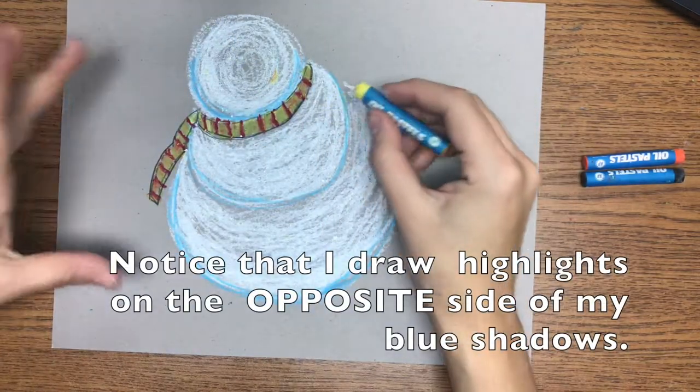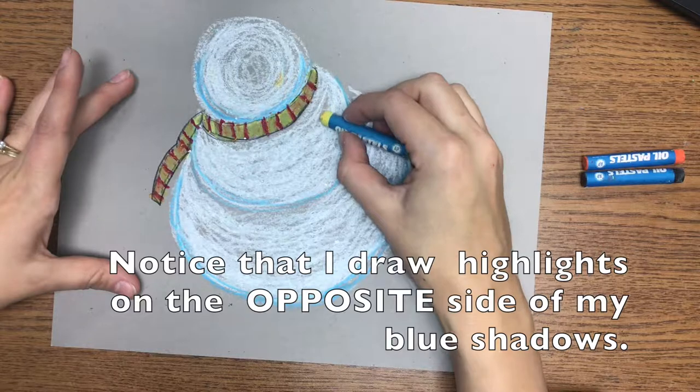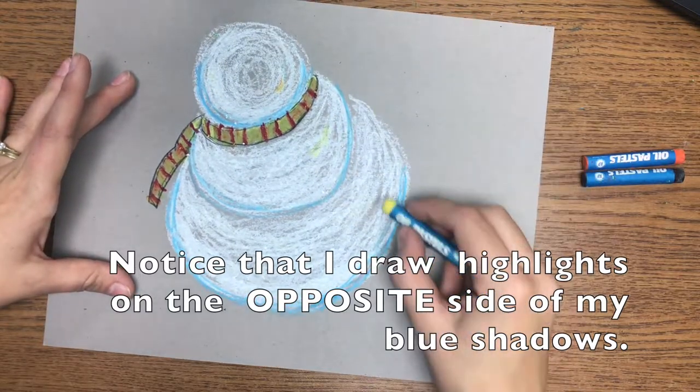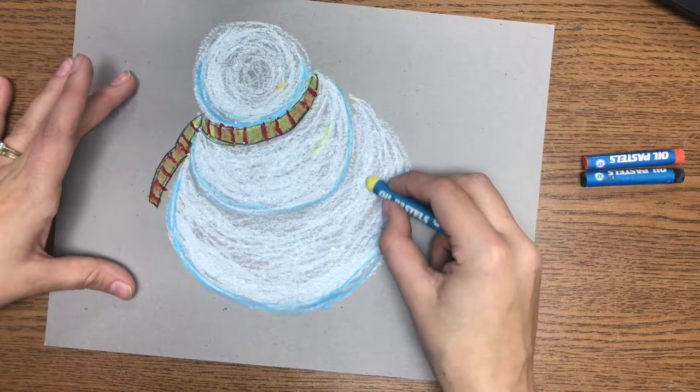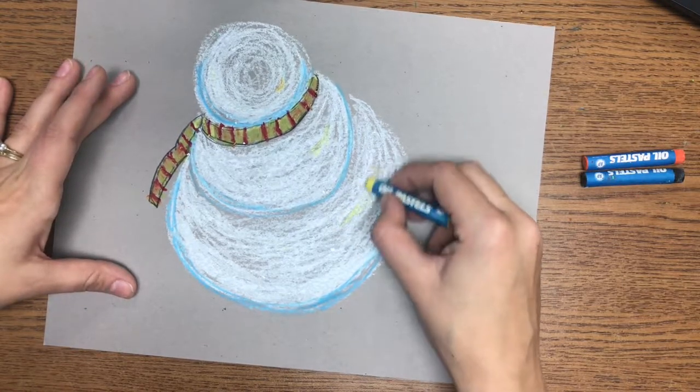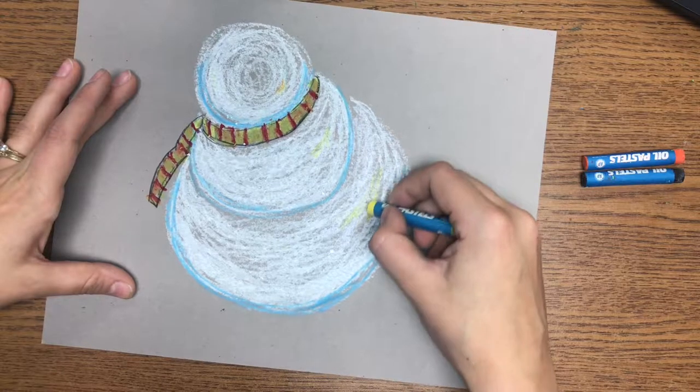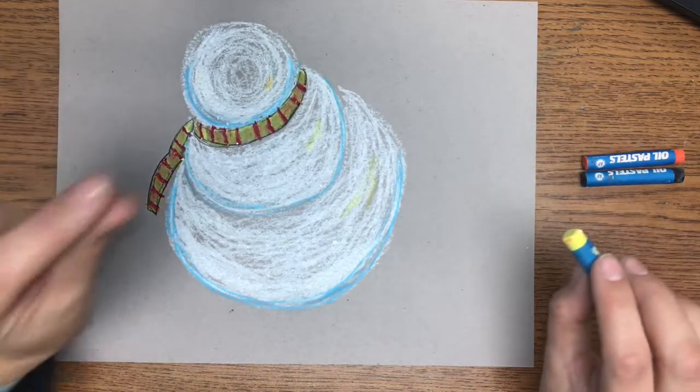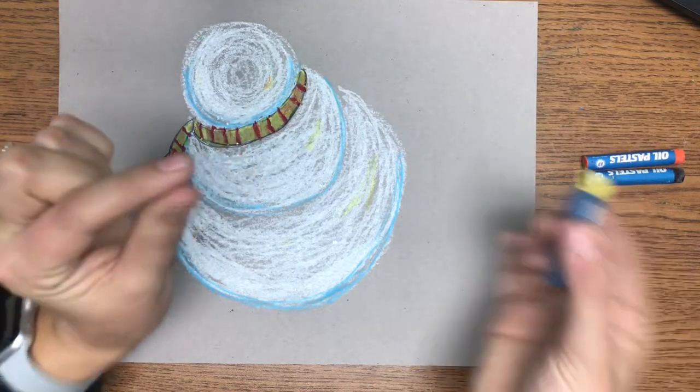Now pay close attention to where I put in these highlights. I'm working in the top right, which is opposite of the blue shadows, which are more towards the bottom and to the left. You are doing kind of a line that follows the shape of the snowball. It curves around with it just in a really small line.